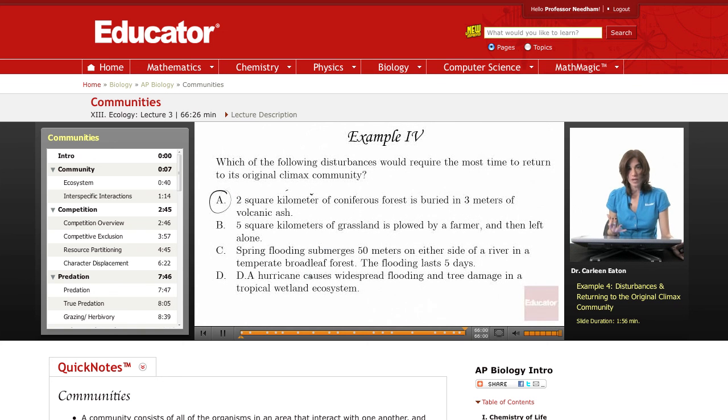In these other disturbances, the soil would still be intact. So reestablishment is quicker and these would represent secondary succession. This would be primary ecological succession. The others represent disturbances that would cause secondary ecological succession.